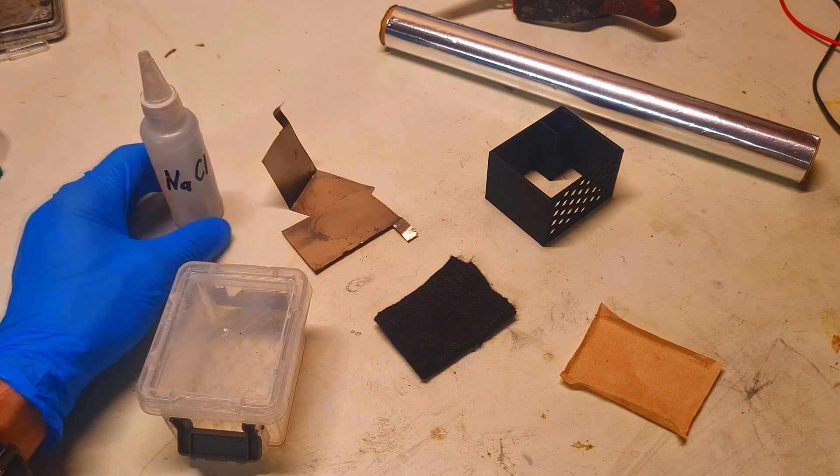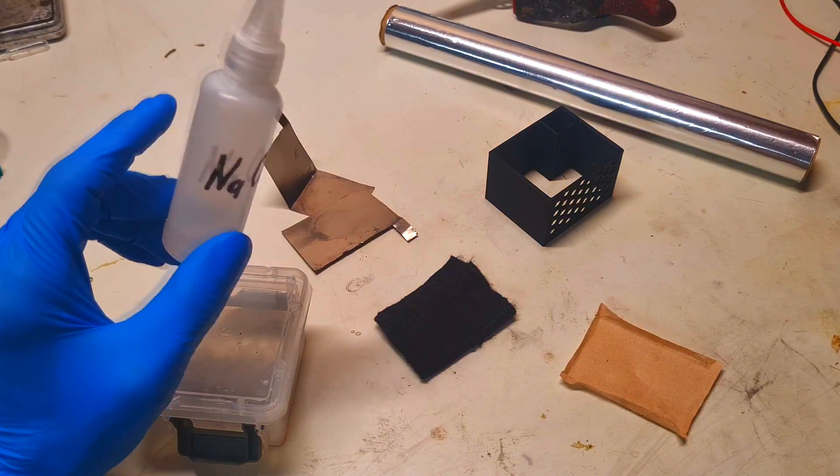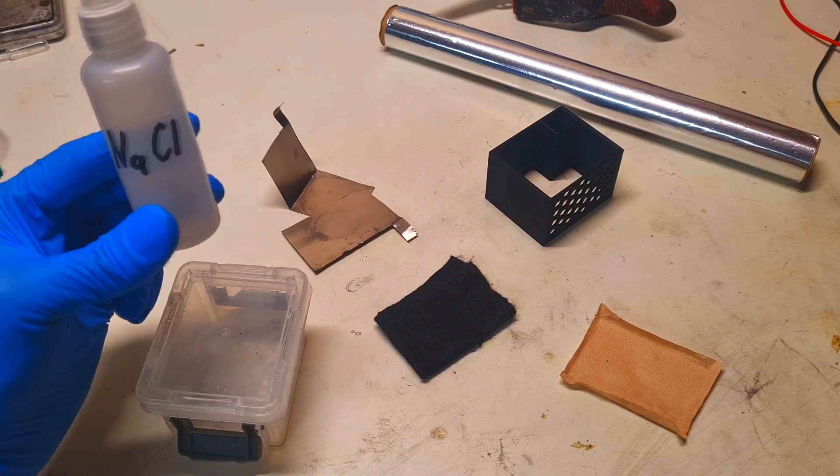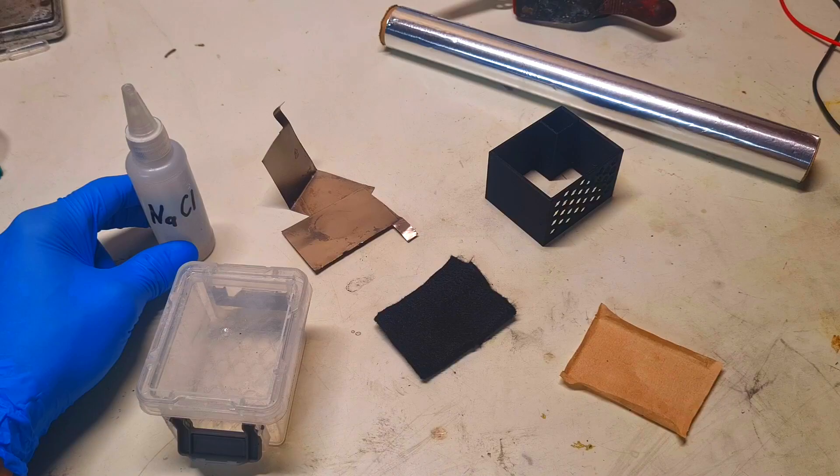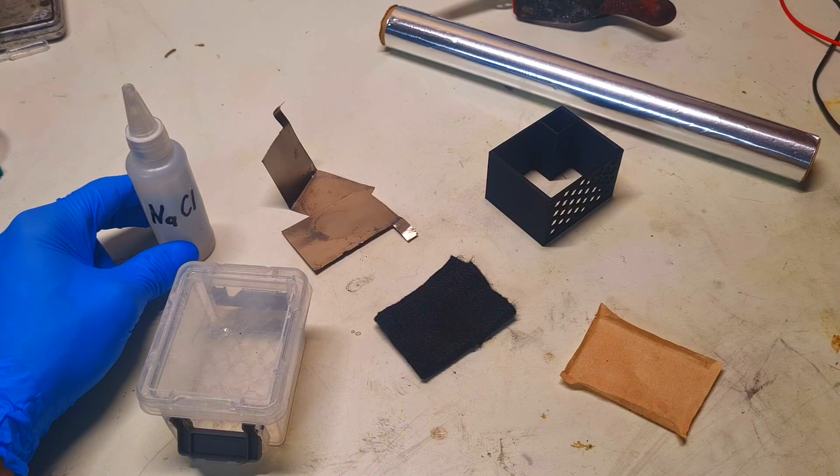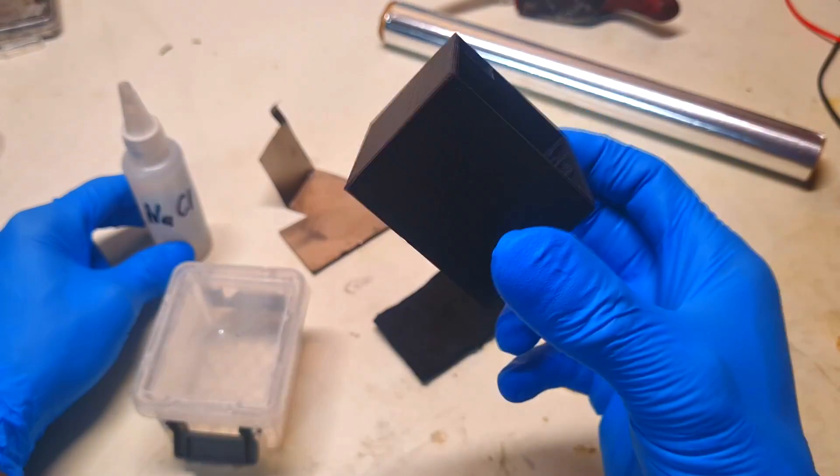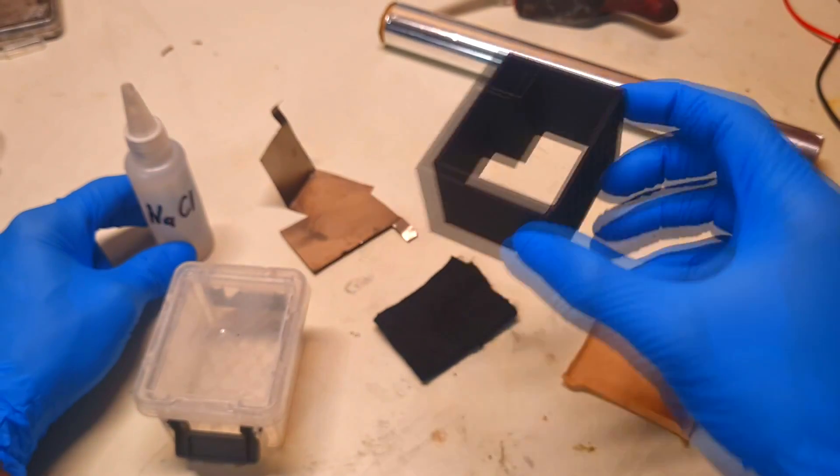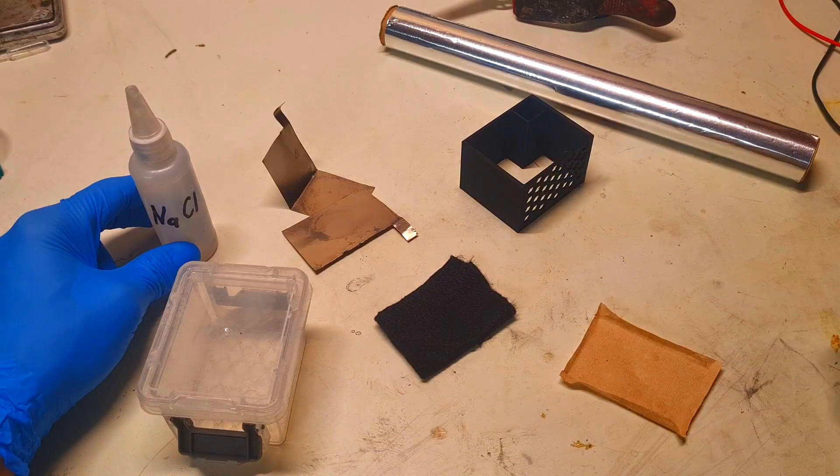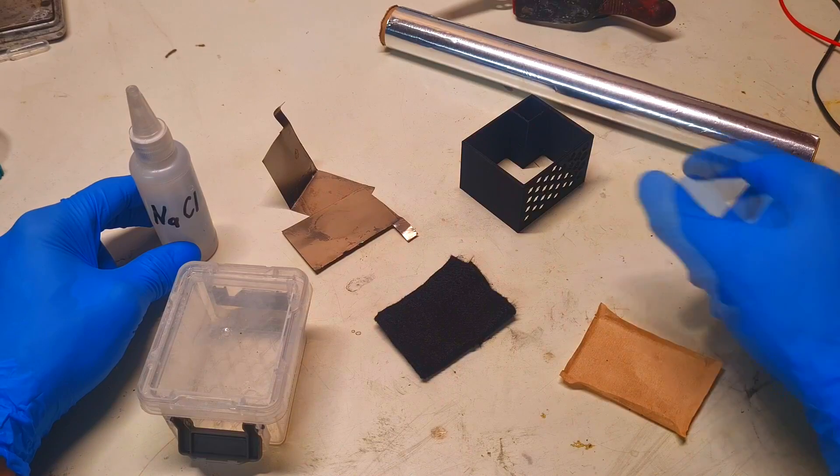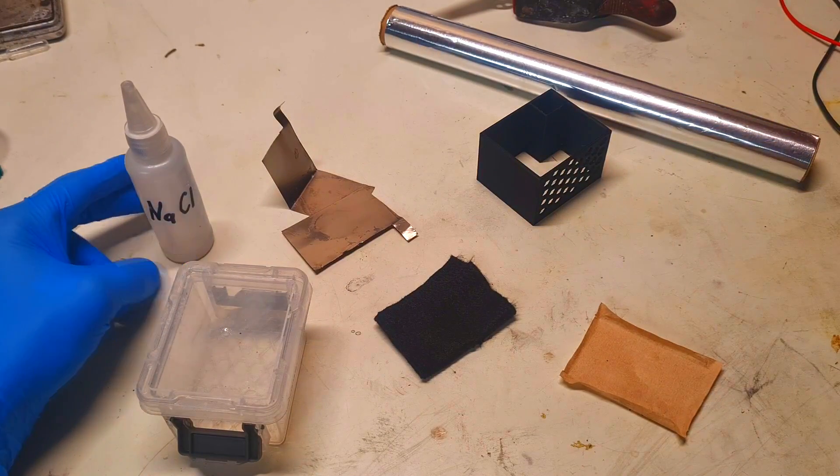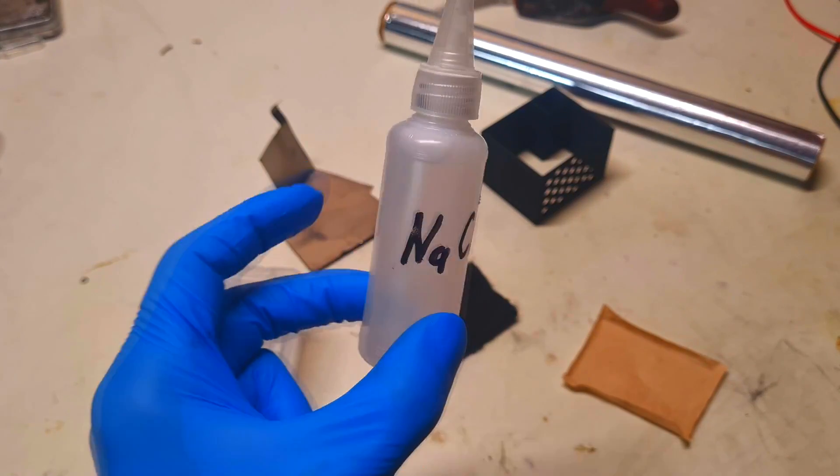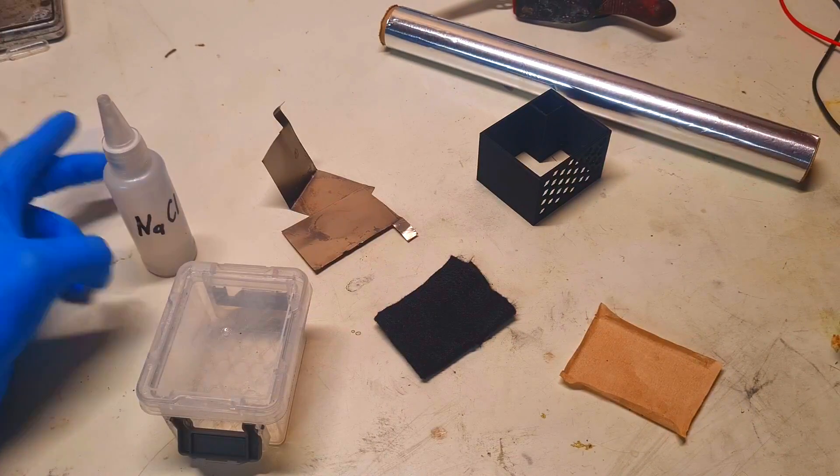For the electrolyte, we use table salt solution. We don't use sodium or potassium hydroxide because this is PLA 3D printed plastic, and sodium or potassium hydroxide can dissolve this plastic really easily.